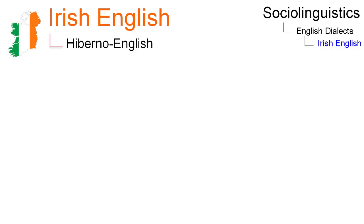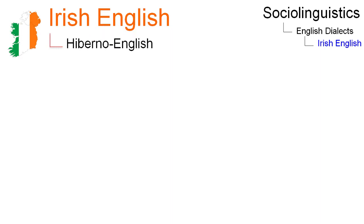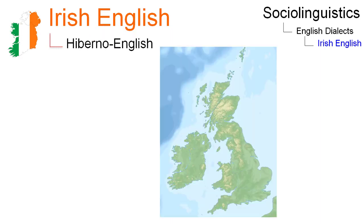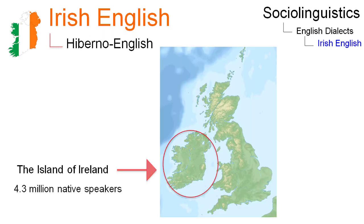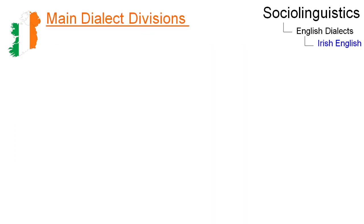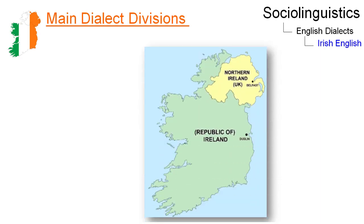Irish English, often called Hiberno English, is a variety of English spoken in Ireland. There are 4.3 million native speakers. The main dialect divisions of Irish English can be seen on this map.